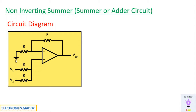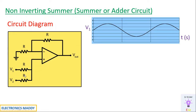The reason it is called a summer is that it basically adds the two input signals V1 and V2 and produces an output, provided all R values are the same. If they are different, there is a different formula to apply. For simplicity, we assume all R values are equal, so Vout equals V1 plus V2.